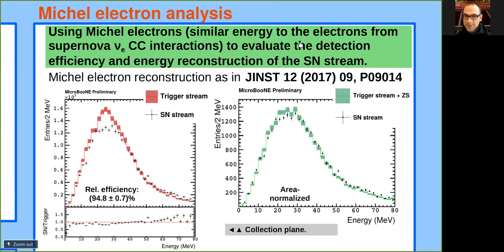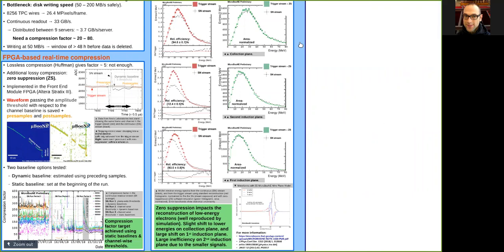Furthermore, we extend this analysis to the other wireplanes of the TPC and find a large drop in efficiency for the middle induction plane and a big shift to lower energies for the first induction plane.